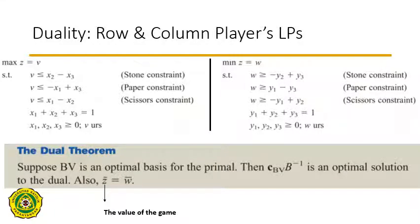If we look at these two LP models — the one for the row player and the one for the column player — we notice that one is the dual of the other. If you recall the concept of duality, for any linear program there is a dual model, and if you take the dual of the dual you get the original problem back. So these two models are the dual of each other.